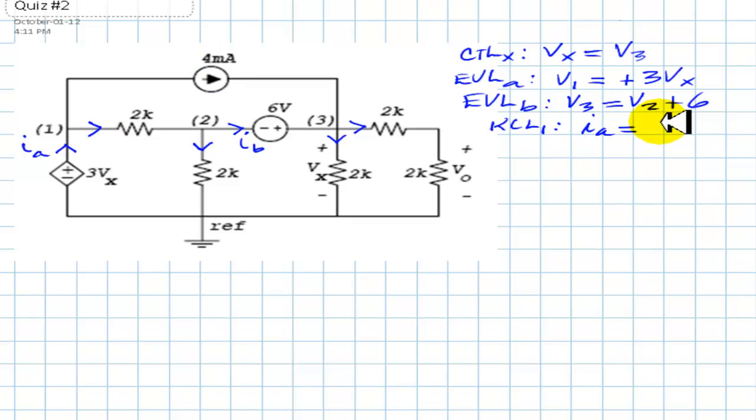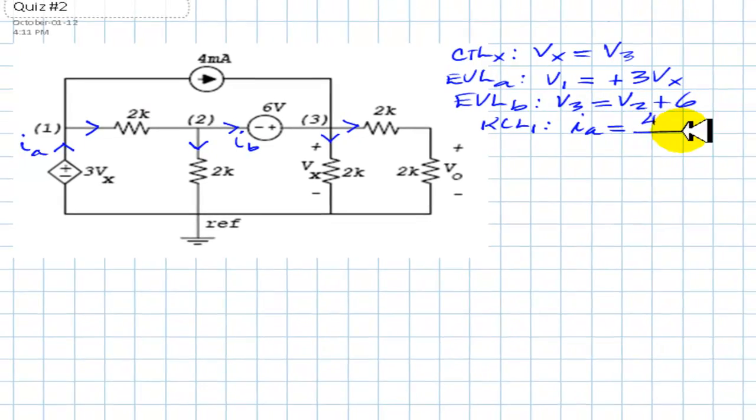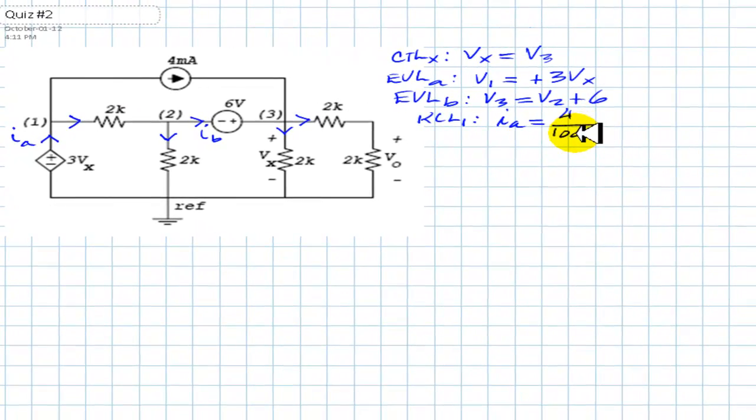Well, there is 4 mA. I'm gonna write that 4 over 1000 just for the convenience of the calculator, plus the current in this R branch, V1. Voltage of the origin minus voltage of the destination divided by the resistance. 1, 2, 3, 1, 2, 3. The equation is complete.